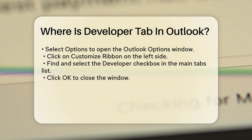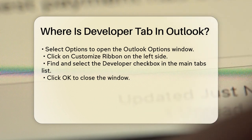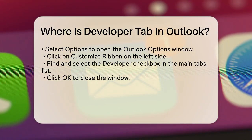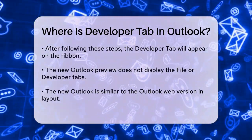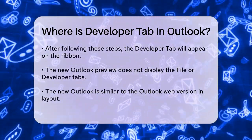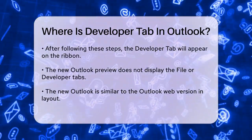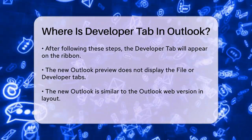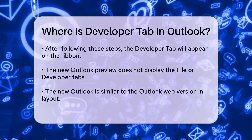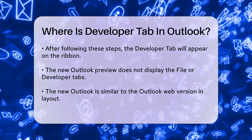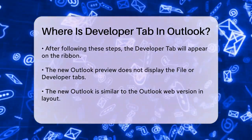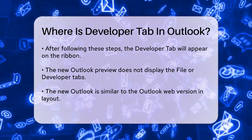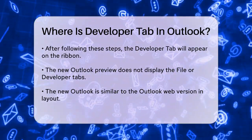However, things are a bit different if you're using the new Outlook Preview. The new Outlook for Desktop, often referred to as Outlook Preview, does not have the File or Developer tabs. It's more similar to the Outlook Web version in this regard. If you need the Developer tab, you might want to revert back to the classic Outlook by disabling the New Outlook toggle or by opening Outlook using Outlook.exe instead of OLK.exe.